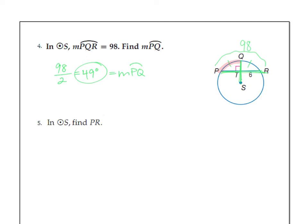Number five. In circle S, find PR. Well, again, I see a couple things. I see this little 6 right here. If that SQ is perpendicular to PR, it's going to cut it in half. So from P to T will also be 6. So PR is going to be 6 times 2, or 12.